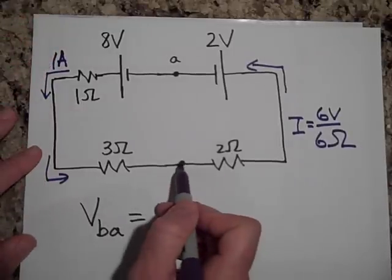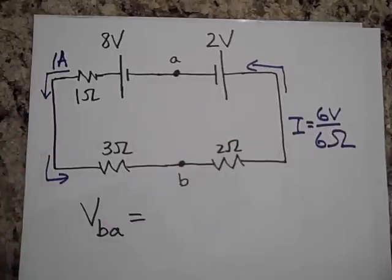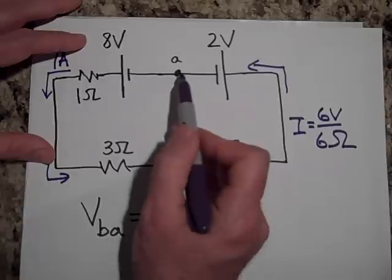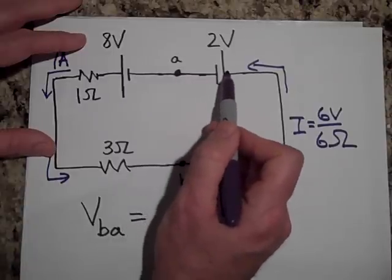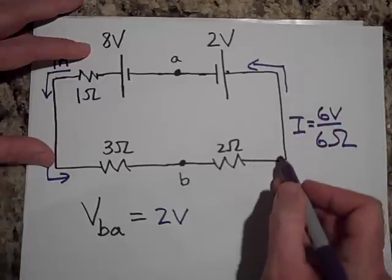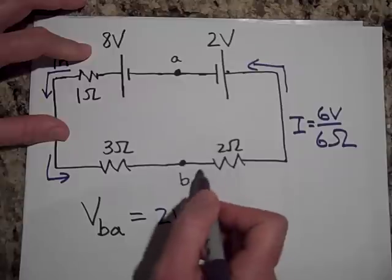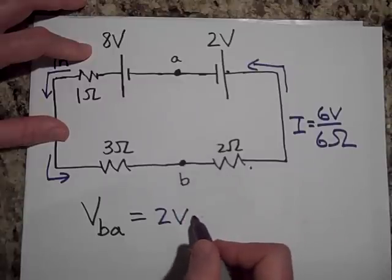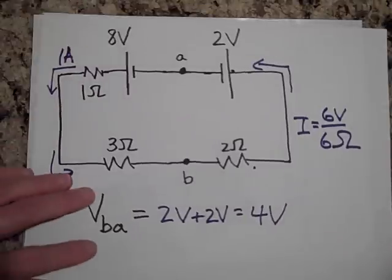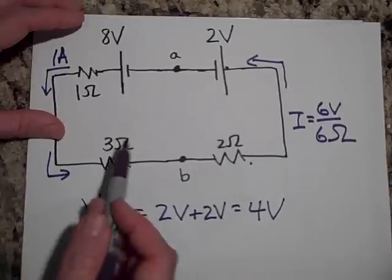If I want to know the voltage at B with respect to A, yeah, then I start at A. I start at A, and I work my way over to B, and it doesn't even matter which way I take, but I'll take this way. I'm going to go up 2 volts, so plus 2 volts, and then I'm going to go up another 2 volts, because the I is 1 amp, and I'm going against the current. Since I'm going against the current, I'm going to go another 2 volts. So that's 4 volts. I should get that same way if I go the other way. Let's see what would happen.